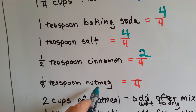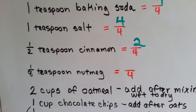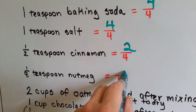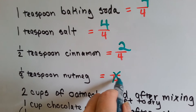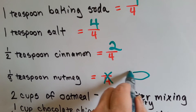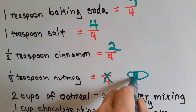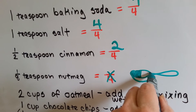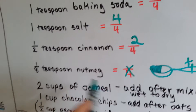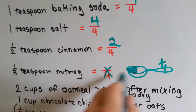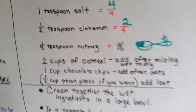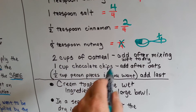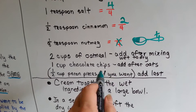We need an eighth of a teaspoon of nutmeg, but we only have a one-fourth teaspoon. So we're going to fill the one-fourth teaspoon halfway with the nutmeg — because this is a one-fourth one and we only need half of it. Then we need two cups of oatmeal, one cup of chocolate chips that we add after the oats, and a half a cup of pecans if you want.